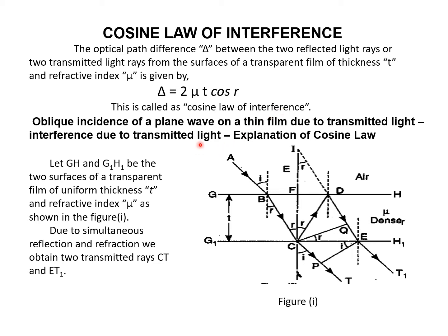We want to discuss this cosine law in the case of transmitted light — oblique incidence of a plane wave on a thin film due to transmitted light. Consider a thin film GH and G1H1, where GH is the upper surface and G1H1 is the lower surface of the transparent film of thickness t and refractive index mu. Due to simultaneous refraction, we obtain two transmitted rays, Ct and Et1.